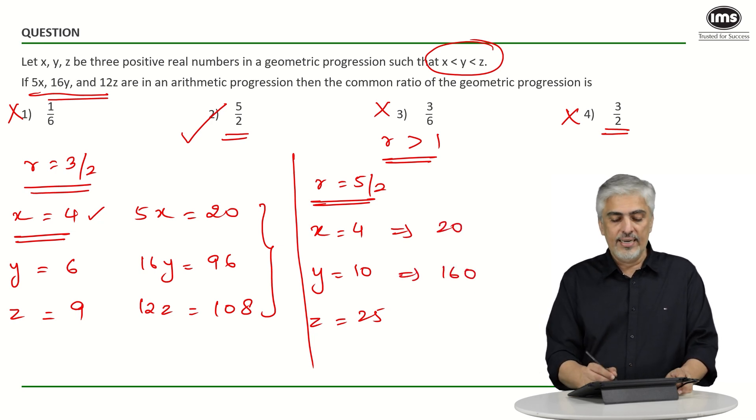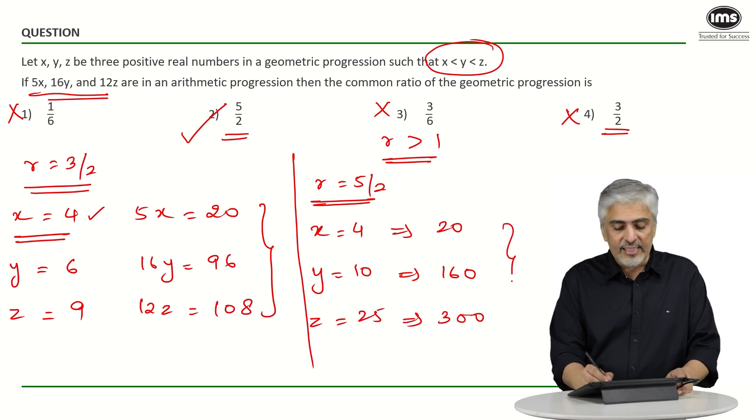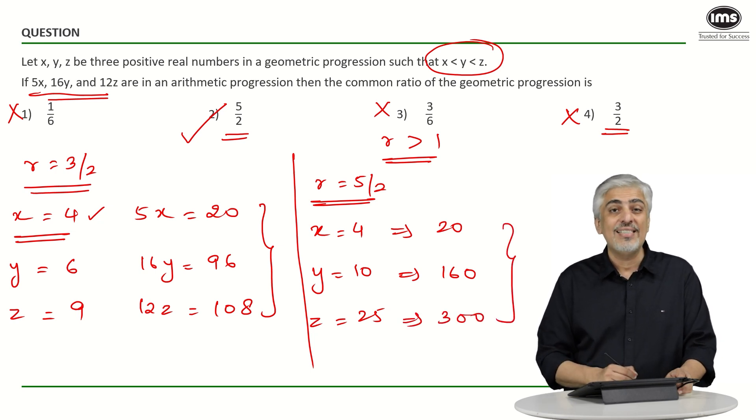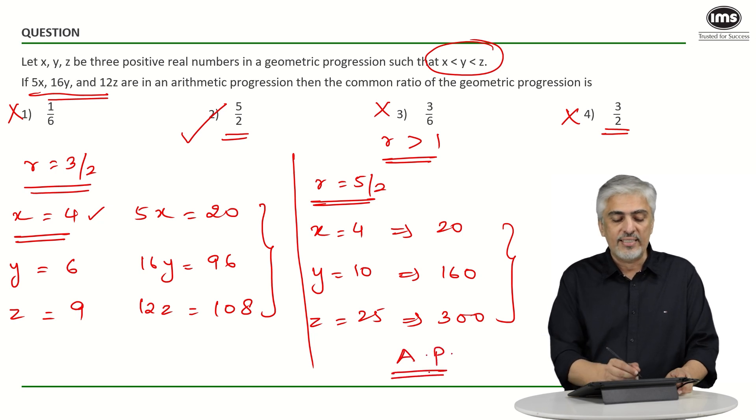What would 5x come out to be? 5x would be 20. 16y would be 160, and 12z would be 300. Is this an arithmetic progression? Yes it is. 20 and 160, the difference is 140. 160 and 300, the difference is 140. So this is an arithmetic progression, which means it satisfies the given condition.